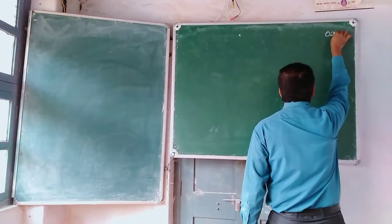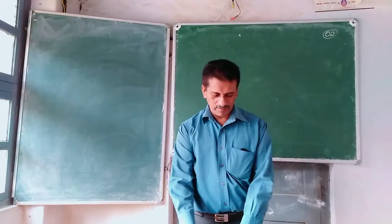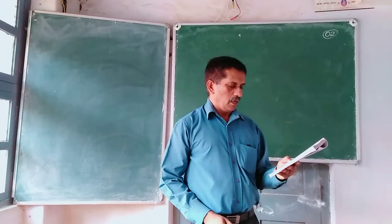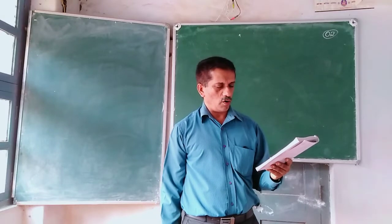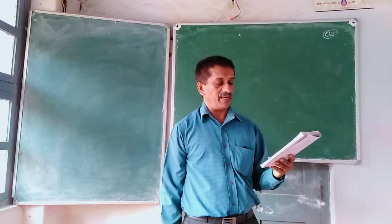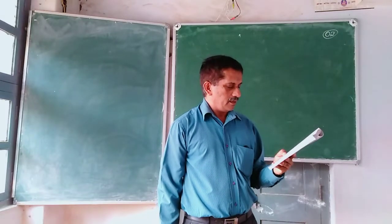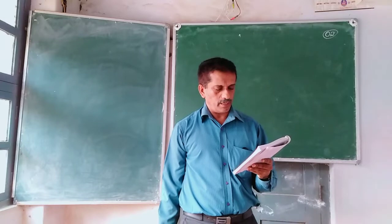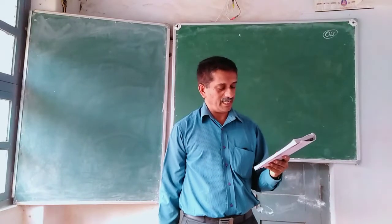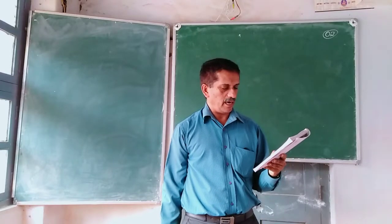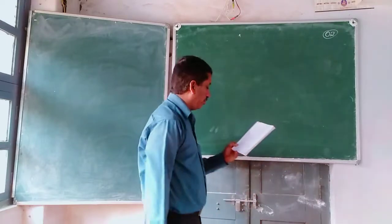Now, question number 2. In order to find the average annual yield of coconut per tree, in a large coconut plantation, 1470 trees were randomly chosen and their yields were noted as below.